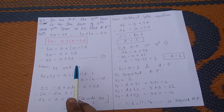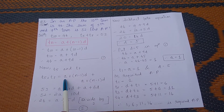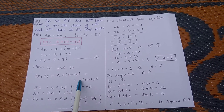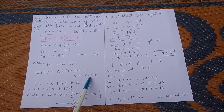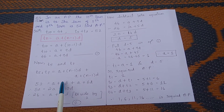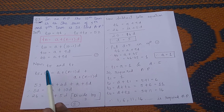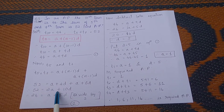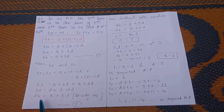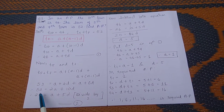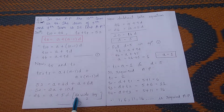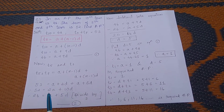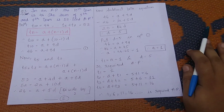For t5 + t7 = 52, we write (a + 4d) + (a + 6d) = 52, giving 2a + 10d = 52. Dividing by 2, we get a + 5d = 26. This is equation 2.